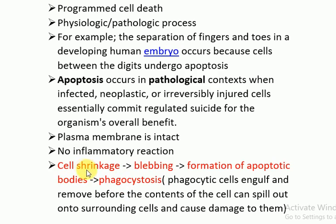The mechanism involves cell shrinkage first, then blebbing, then the formation of apoptotic bodies. These apoptotic bodies are then phagocytosed and engulfed before the contents of the cell can spill out onto surrounding cells and cause damage or an inflammatory reaction. So there is no inflammatory reaction and the plasma membrane remains intact.